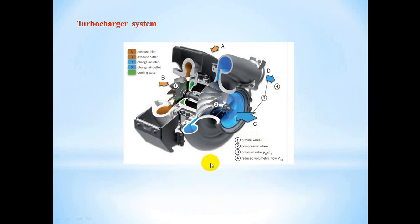How does the compressor work? The compressor consists of two parts: the compressor wheel and the compressor housing. The compressor wheel is attached to the turbine by a forged steel shaft. As the turbine turns the compressor wheel, the high velocity spinning draws air into the compressor. The compressor housing converts the high velocity air into high pressure air through a process called diffusion, allowing the engine to burn more fuel and produce more power.